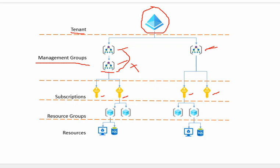A subscription in Azure is a container that holds related resources — a collection of connected business or technical resources. Under each subscription we may have multiple resource groups. A resource group is a container that holds related resources for an Azure solution. We can club together related resources in each resource group and keep expanding resources within each subscription.